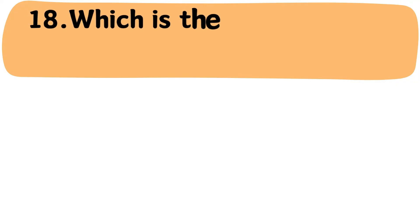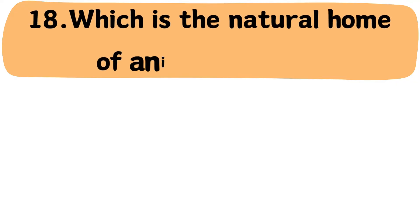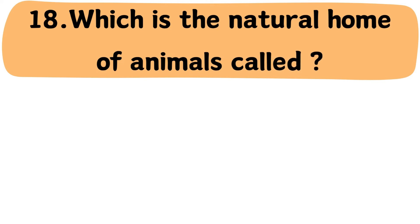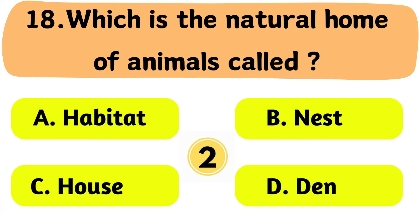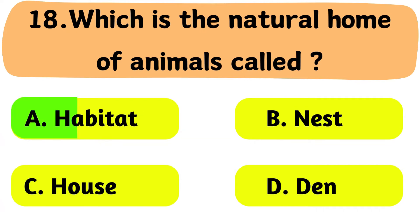Question No. 18: What is the natural home of animals called? A. Habitat. B. Nest. C. House. D. Den. The correct answer is Option A: Habitat.